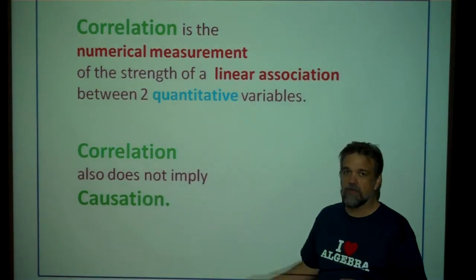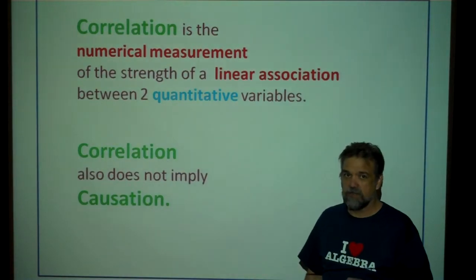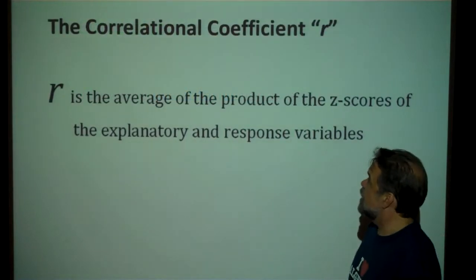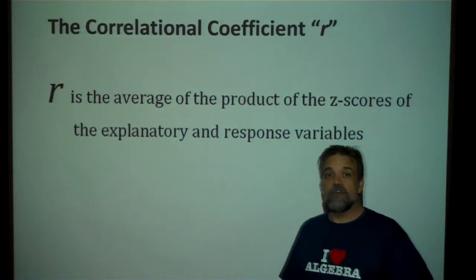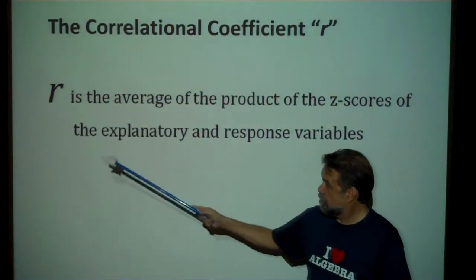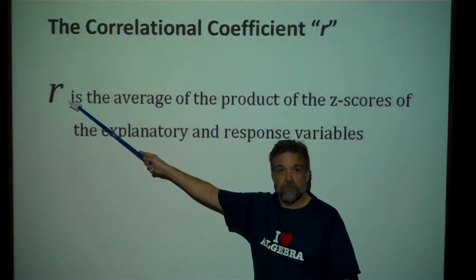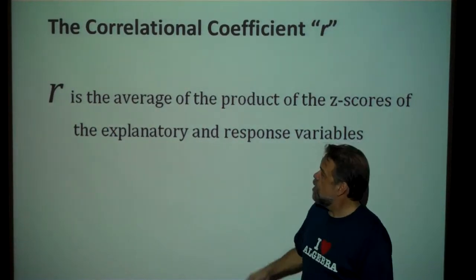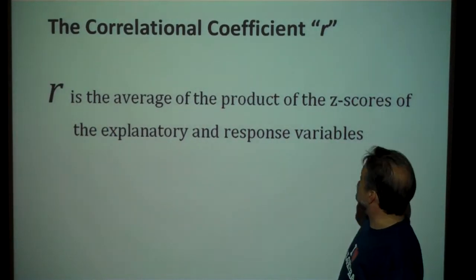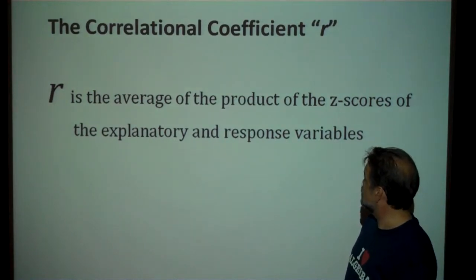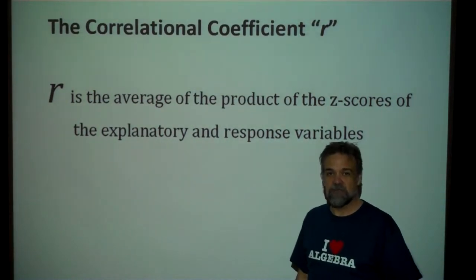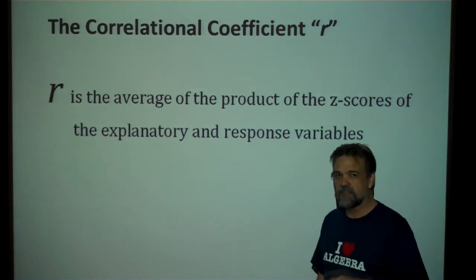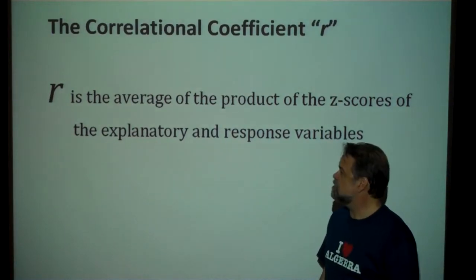Correlation also does not imply causation — so stop trying to imply causation. Now, how do we measure correlation? With the correlation coefficient, of course. We call it R. R is the average of the product of the z-scores of the explanatory and response variables. Probably not immediately clear, so we're going to talk about this a little bit more.